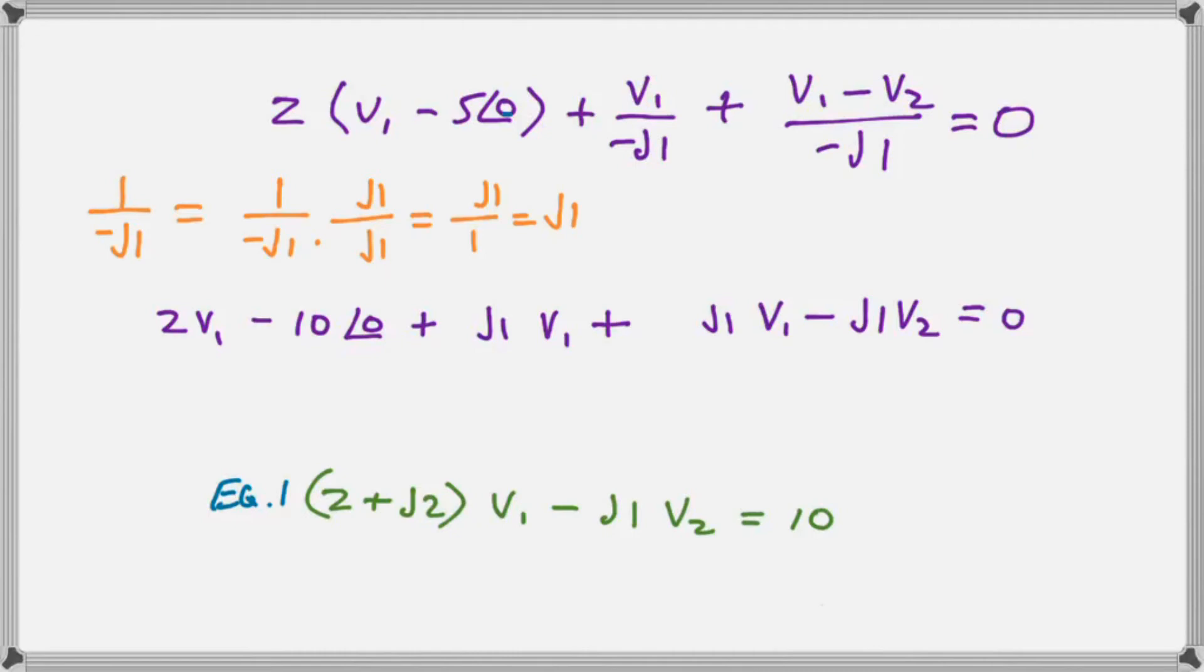Now, we show you there how we can turn the denominator into its reciprocal. That's the purpose of the orange there. 1 over negative J is the same as multiplying by J as shown there in the orange. So, we multiply out the brackets and then we collect up terms and rearrange the equation as shown in the green.